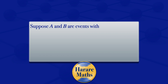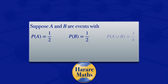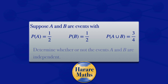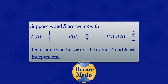Suppose A and B are events with the probability of A being 1/2, the probability of B being 1/2, and the probability of A union B being 3/4. In this tutorial, I am going to determine if the events A and B are independent.